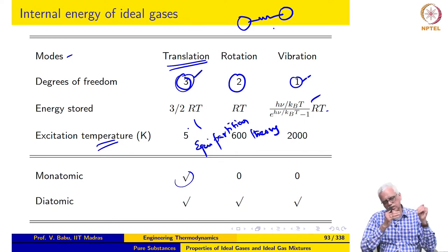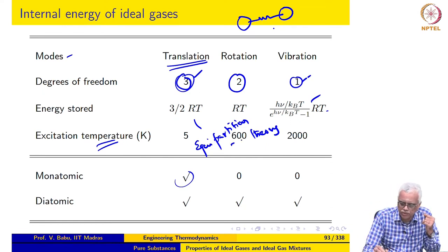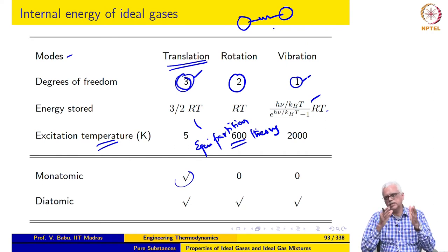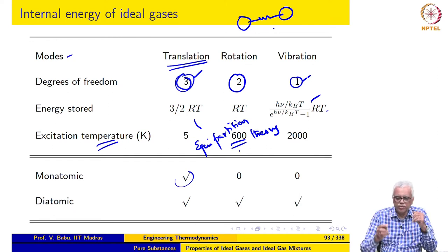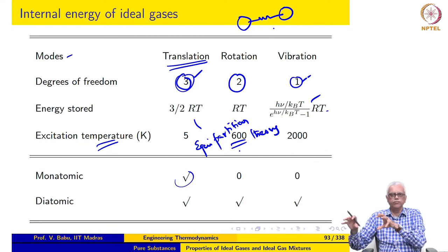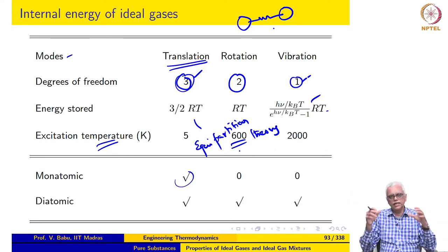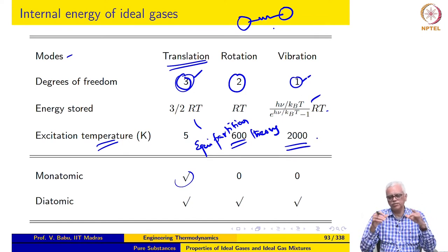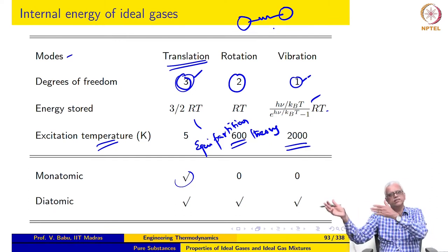Once we reach 5 Kelvin, translation is fully excited and molecules can start storing energy in the rotational mode. As we keep increasing temperature, molecules move at higher velocity and also rotate with higher velocity. Until we reach about 600 Kelvin, at which point rotation is fully excited and energy storage in the vibrational mode begins. Once we reach 600 K, the molecules are translating and rotating in two directions, and beyond 600 K the bonds also begin to vibrate.